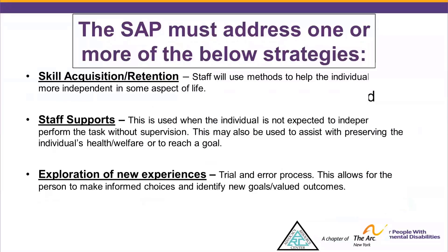The Staff Action Plan must address one or more of the following strategies: Skill Acquisition Retention — these methods will help the individual become more independent in some aspect of life. Staff Support — this may be used when individuals are not expected to independently perform a task without supervision, or to preserve the individual's health or welfare or to reach a goal. Exploration of New Experiences — this is a trial and error process that allows the person to make informed choices and identify new goals or valued outcomes.